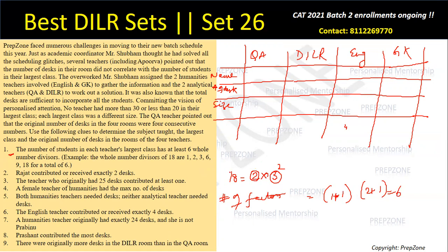In general, if a number has prime factorization x^a × y^b × z^c, then the number of factors is (a+1)(b+1)(c+1).